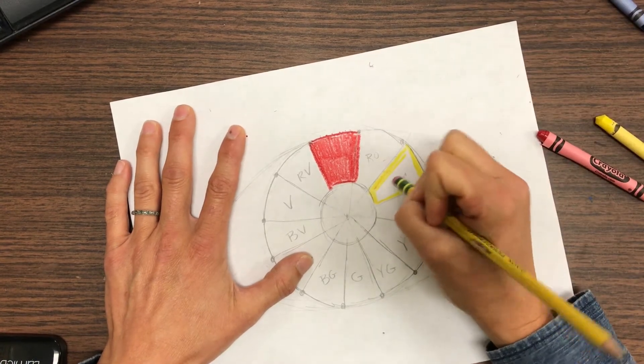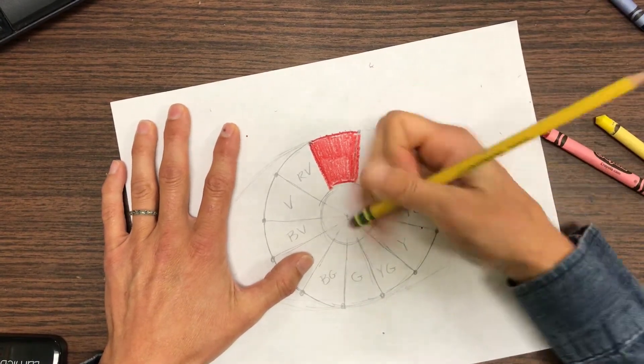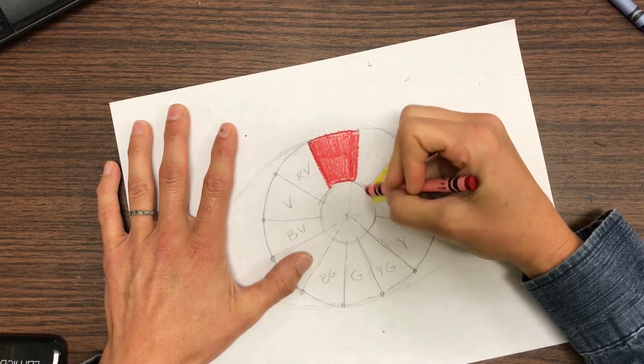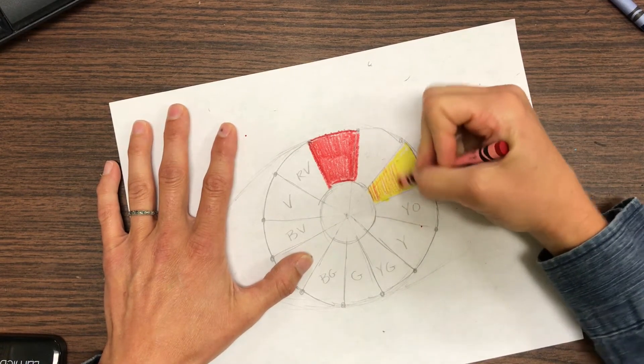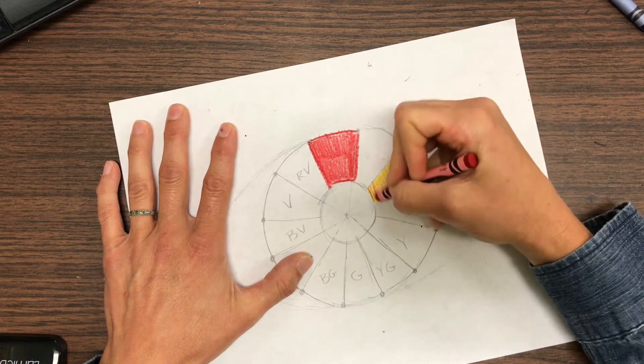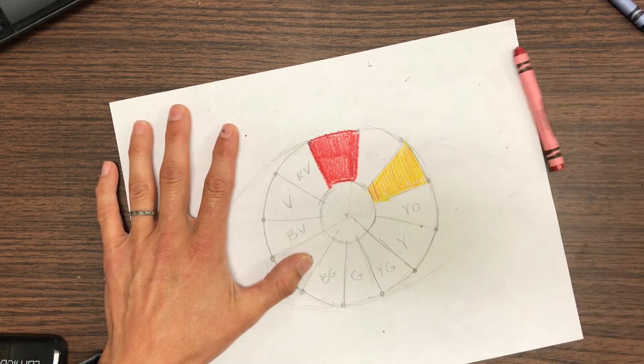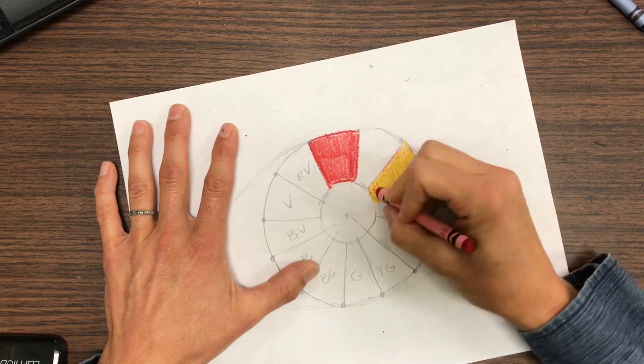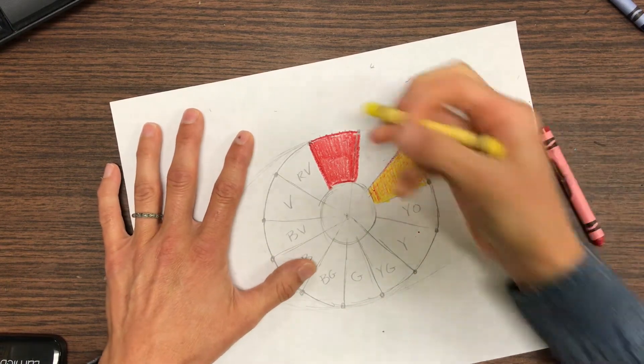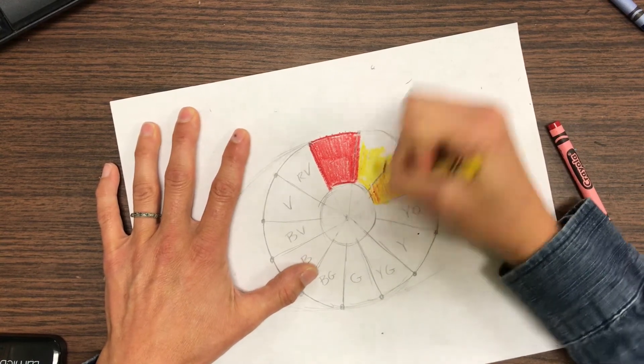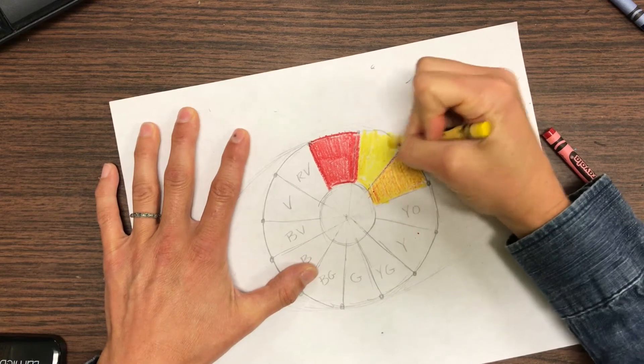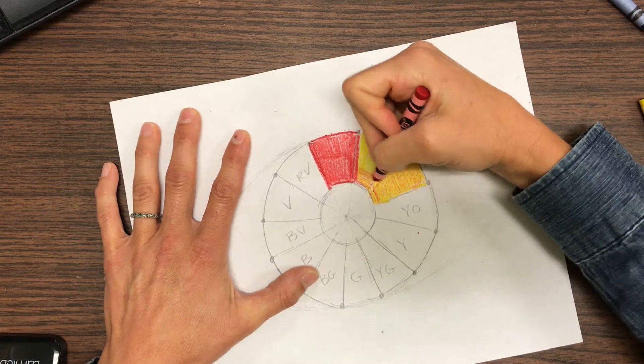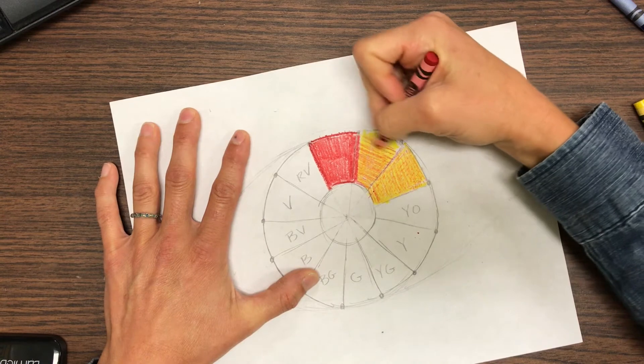Let me erase that O. I'm gonna erase this too. So this one's gonna be orange. Same thing, I could always do another layer of yellow to make it lighter. I think I'm gonna do a little bit more red too though. Now I'm gonna do my red orange so I'm gonna press a little bit harder with that red crayon to make a little bit more of that red cover up the yellow.